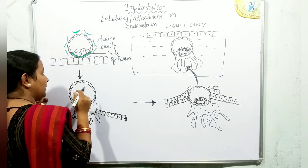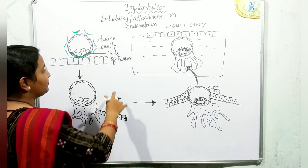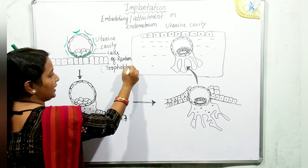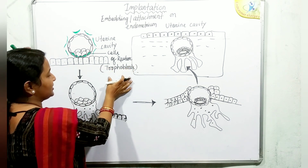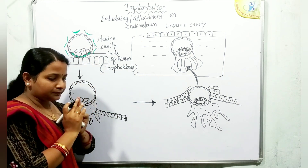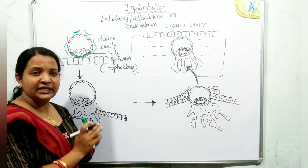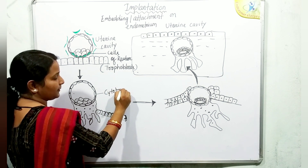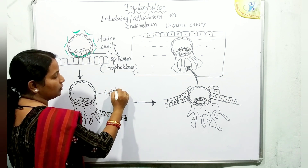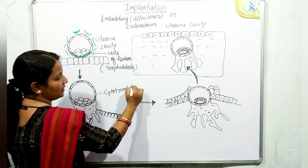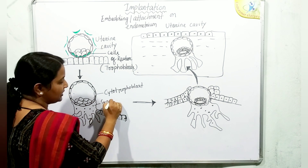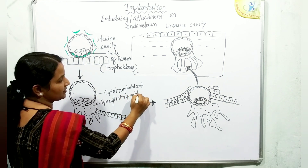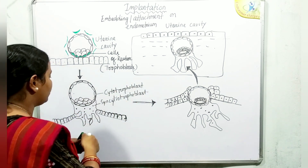After disintegration of the zona pellucida, the cells of Rauber — which are trophoblastic cells — multiply rapidly and form two distinct layers: the cytotrophoblast and the syncytiotrophoblast.